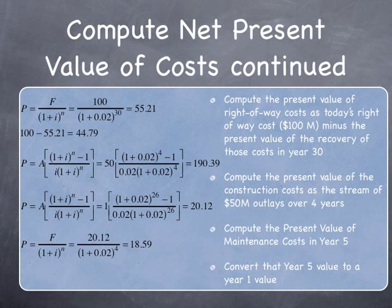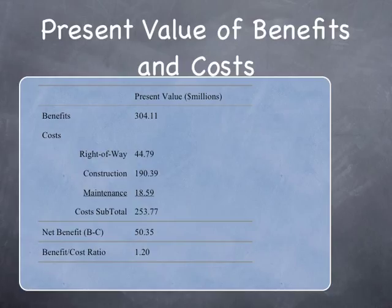We do the same for costs. The $100 million salvage value in year 30 is worth $50 million today at 2% interest. The present value of the construction stream over 4 years equals $190 million today. The present value of maintenance costs of $1 million a year for 26 years equals $20 million, and bringing that back from year 5 to today gives $18.6 million. You don't need to memorize the equations — just sum up benefits and costs in present value terms.